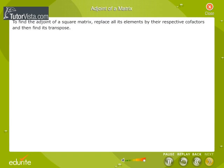To find the adjoint of a square matrix, replace all its elements by their respective cofactors and then find its transpose. For example,